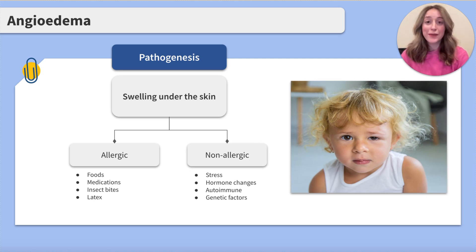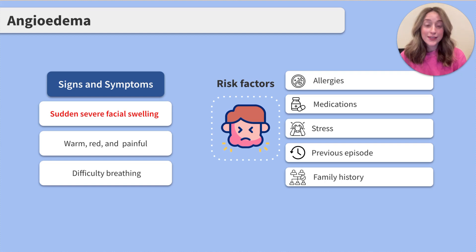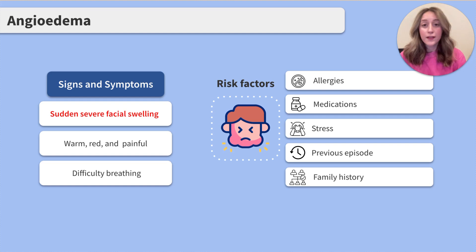Now that we know what angioedema is, let's take a look at how these clients may present to us when we're working on the floor as a nurse. The symptoms of angioedema include sudden and severe swelling, typically around the eyes and lips. The affected area may be warm, red, and painful. The client may also have difficulty breathing or swallowing if swelling occurs in the throat.